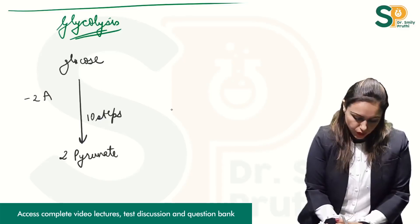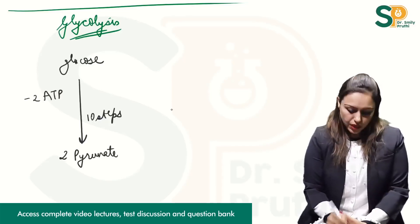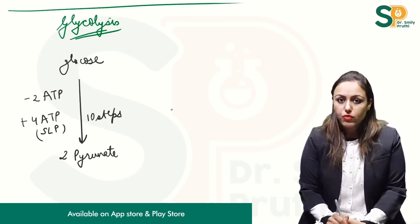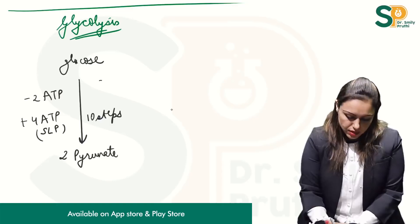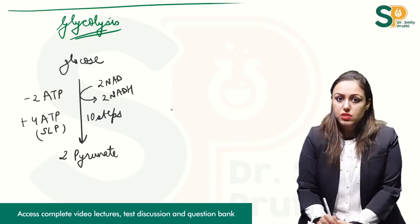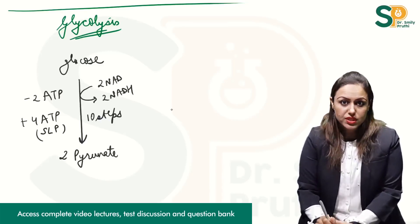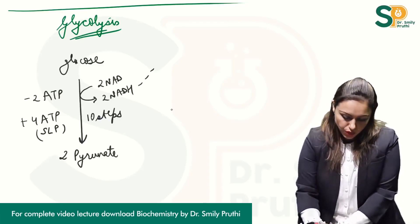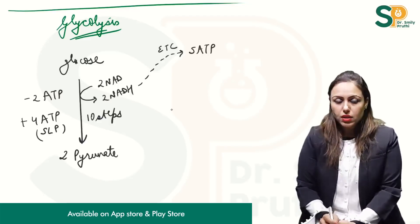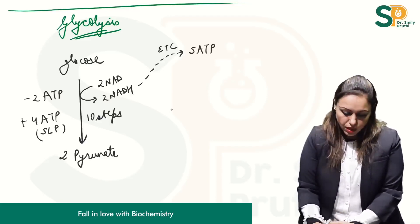In phase 1, minus 2 ATPs. Plus 4 ATPs via substrate level phosphorylation. And 2 NAD gets converted to 2 NADH in the glyceraldehyde-3-phosphate dehydrogenase step. These 2 NADH will go into the ETC to give 5 ATPs.